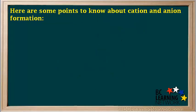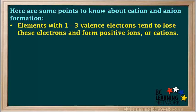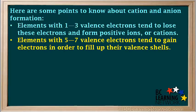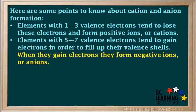Here are some points to know about cation and anion formation. Elements with one to three valence electrons tend to lose these electrons and form positive ions, or cations. Elements with five to seven valence electrons tend to gain electrons in order to fill up their valence shells, forming negative ions, or anions.